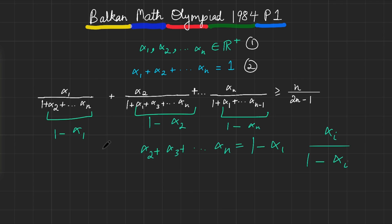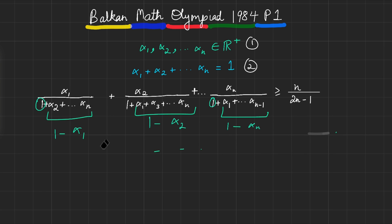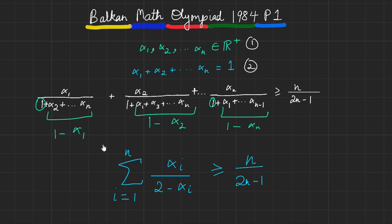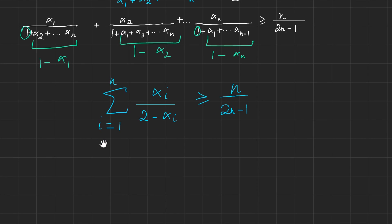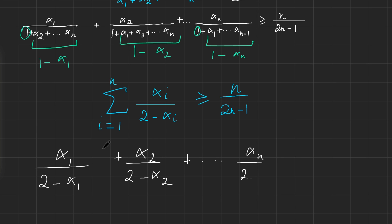So instead of the complicated original sum, we can write it as the sum over all i of αᵢ over (1 + (1 − αᵢ)), which simplifies to the compact form: sum from i=1 to n of αᵢ over (2 − αᵢ). We now need to prove this is greater than or equal to n over 2n minus 1.